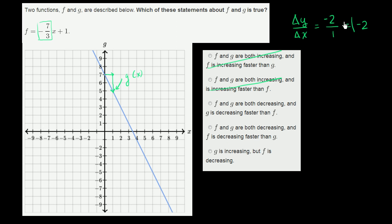So g has a slope of negative 2. f has a slope of negative 7 thirds. Negative 7 thirds is the same thing as negative 2 and 1 third. So f's slope is more negative, so it is decreasing faster.